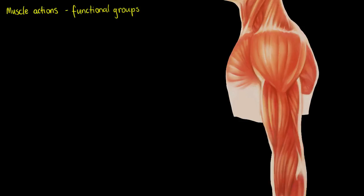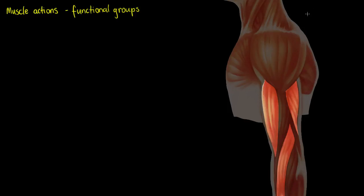What I've got up on the screen here is a left lateral view of a person from the shoulder down, just focusing on their left arm. We've got a couple of the muscles highlighted in a left lateral view, and now we can focus on what these functional groups are.